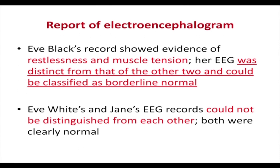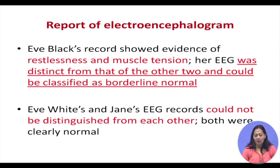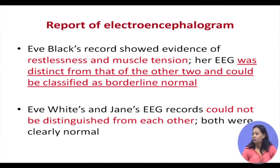Thigpen and Cleckley carried out an EEG — an electroencephalogram — on all three personalities. Eve Black's records showed evidence of restlessness and muscle tension. Her EEG was distinct from that of the other two and could be classified as borderline normal, while Eve White and Jane's EEG records were very similar to each other. Eve Black's was contrastingly different.